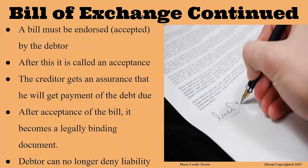What happens to the bill of exchange after the drawee has accepted it? Then he signs it, and now it is no longer called a bill of exchange — but rather, an acceptance. It now means that the debtor has accepted full liability for the amount of money he owes the drawer. The bill is therefore legally binding as of this point, and the acceptor can no longer deny liability.